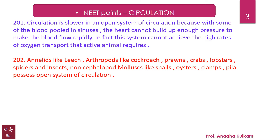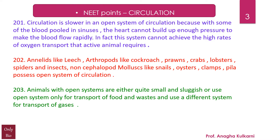Annelids like leech, arthropods like cockroach, prawns, crabs, lobsters, spiders, and insects, and non-cephalopod molluscs like snails, oysters, clams, and Pila possess an open system of circulation. Animals with open systems are either quite small and sluggish, or use the open system only for transport of food and wastes and use a different system for transport of gases.